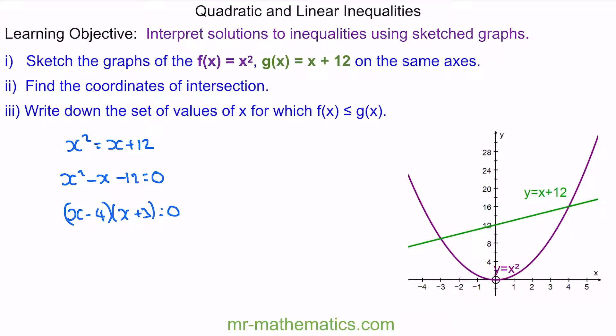Now we can find the solutions where x equals 4 and x equals negative 3. This tells us that they intersect here at negative 3 and here at positive 4.